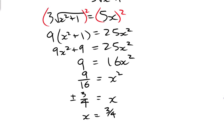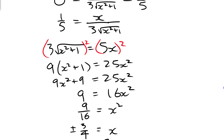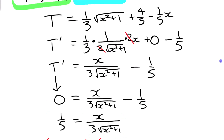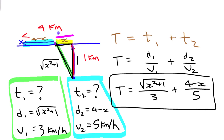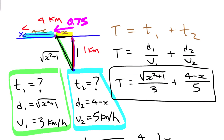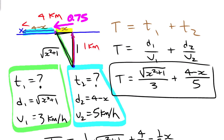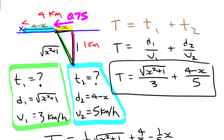Looking back at our situation, x was the distance down the shore where we land the boat. So we minimize our travel time if we land 0.75 kilometers (three quarters of a kilometer) down the shore and then walk the rest of the way. That is the optimum solution.